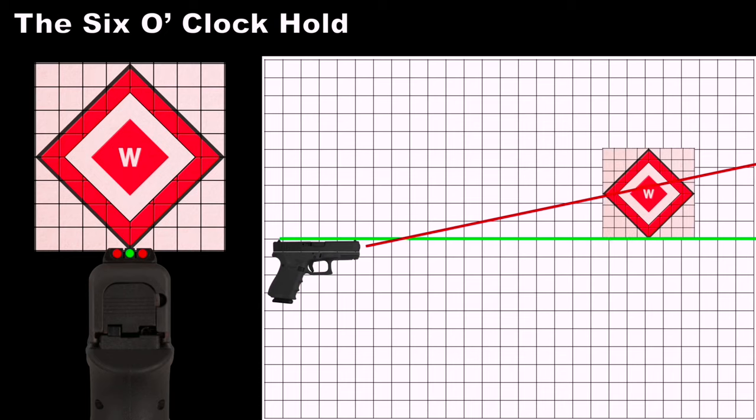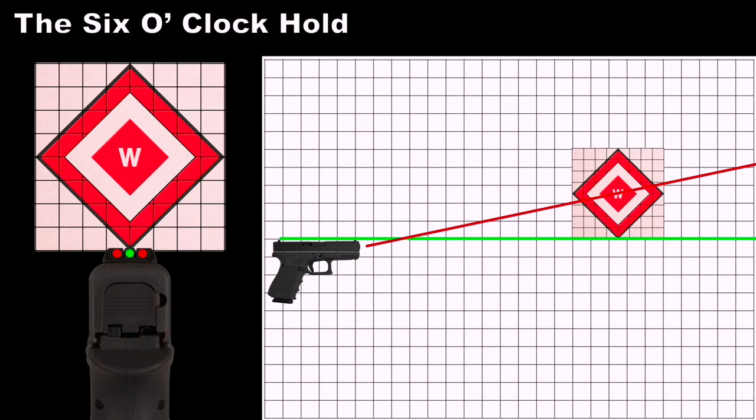The barrel axis is not parallel to your line of sight. There will always be an intersect point between the trajectory of your round and the line of your sights. It's important to know for what distance your sights are zeroed. For the six o'clock hold, your sights must be adjusted for each different size target and distance.